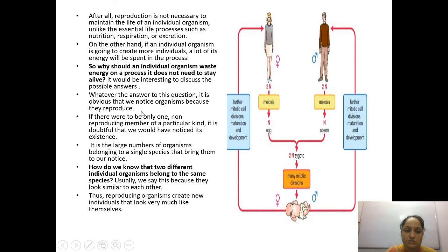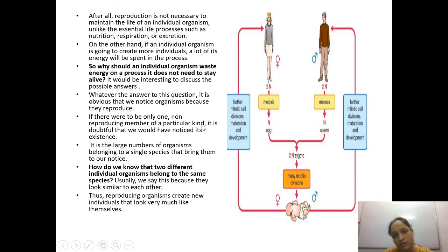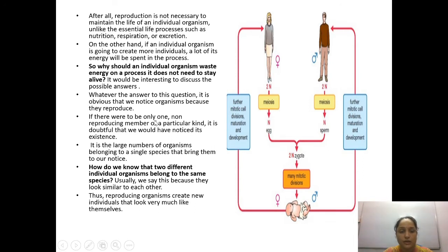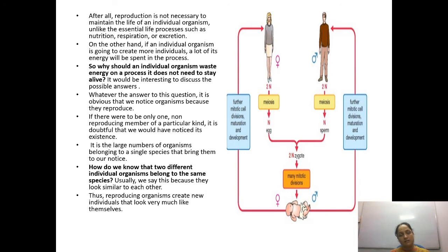It is obvious that we notice organisms because they reproduce. If there were only one organism of a species, you would not even be able to see that species. If there were only one non-reproducing member of a particular kind, it requires a partner to reproduce, so there's no question of another organism coming into the picture. It is a large number of organisms belonging to the same species that brings them to our notice.